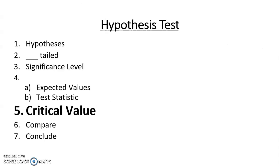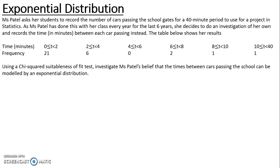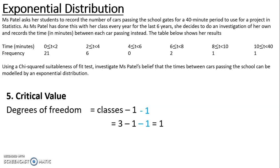Next I need to calculate my critical value. So for the critical value, I need the degrees of freedom. This is the number of classes or the number of categories minus 1, and then because I've had to estimate my parameter lambda, I need to subtract an extra 1. This is the bit that is different because I'm estimating parameters. So I've shrunk this down to three categories: 0 to 2, 2 to 4, and 4 to 40. So I have 3 take away 1, take away 1, which means my degrees of freedom is 1.